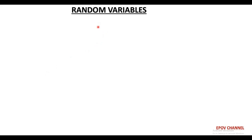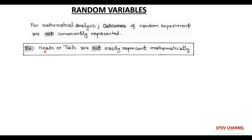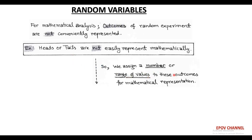After discussing the concept of probability and the relationship with sample space and events, we move to the next topic called random variables. Random signals are non-deterministic signals, and experiments based on these random signals are called random experiments. The outcomes of these random experiments are not represented mathematically for our analysis.